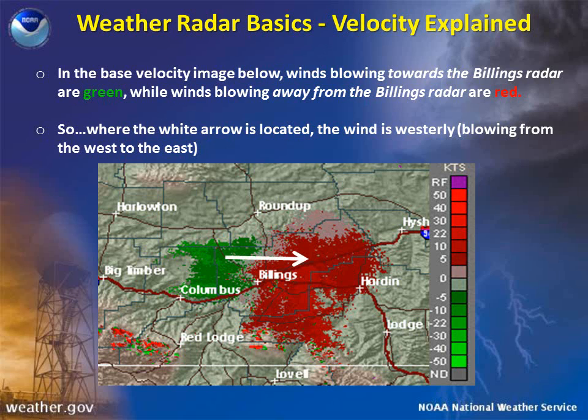The white arrow indicates the direction of movement. The legend at the right of the picture shows that the wind speed is measured in knots. The RF in the legend means range folding, which sometimes occurs when the radar cannot determine a wind speed or direction due to interference. Range folded data is not usable data. The ND in the legend means that there is no data available, so wind speed cannot be determined.